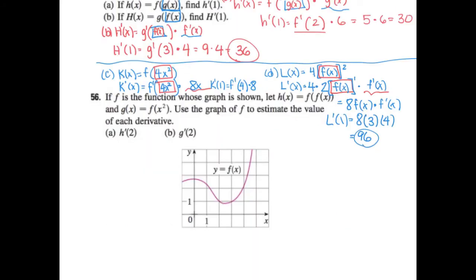In this final problem, h of x equals f of f of x and g of x equals f of x squared. For h prime of x: f of f of x means my baby is f of x, so h prime of x equals f prime of f of x times f prime of x. For g prime of x: my baby is x squared, so g prime of x equals f prime of x squared times 2x.